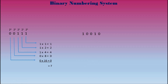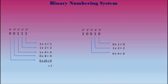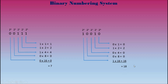Let's do that one more time with binary number 10010. In the first column we have a 0, so 0 times 1 equals 0. Next column we have a 1, so 1 times 2 equals 2. Next column: 0 times 4 equals 0. Next column: 0 times 8 equals 0. Final column: 1 times 16 equals 16. We take all the answers and add together the non-zero values: 2 plus 16 gives us an answer of 18.